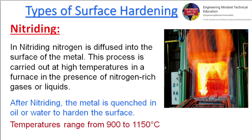Nitriding. In nitriding, nitrogen is diffused into the surface of the metal. This process is carried out at high temperatures in a furnace in the presence of nitrogen-rich gases or liquids. After nitriding, the metal is quenched in oil or water to harden the surface. Temperatures range from 900 to 1150 degrees Celsius.